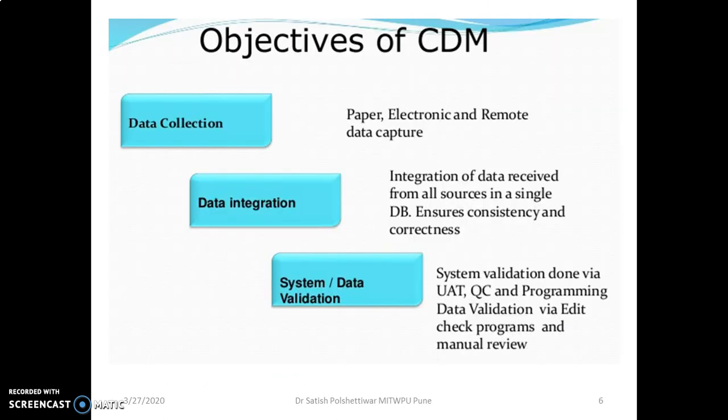So what are the objectives of CDM? The objective includes data collection in the form of paper, electronic format, and remote data capture. The next objective is data integration — they have to integrate all the data, because you are getting data in unstructured or raw form. You have to manage it properly using different electronic tools. You have to ensure consistency and correctness, then validate the system and data. For that we use various software; UAT quality control managers and programming — we use SAS programmer, the statistical analysis system — edit check programs, and manual review. You have to review the data and then submit to the regulatory agency.